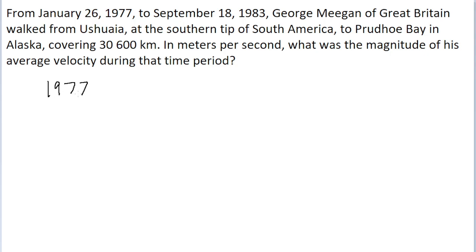There's 1977, starting from January 26th, 1978, 1979, 1980, 1981, 1982, and 1983, ending on September 18th. And of course, remember that there are 365 days in a typical year.